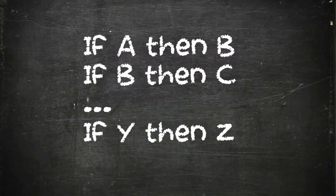As it is stated in A Concise Introduction to Logic, the slippery slope fallacy has this form: if A then B, if B then C, and so on and so forth, if Y then Z. So the slippery slope tends to be an argument where you say, well, if you take one small step, it's going to snowball eventually until you get catastrophic consequences.